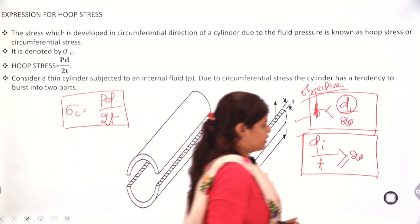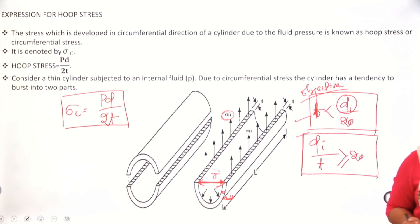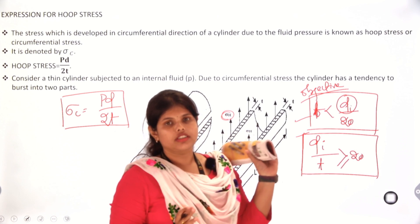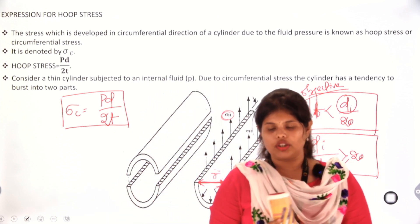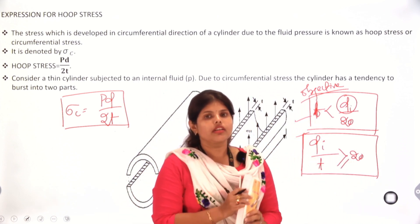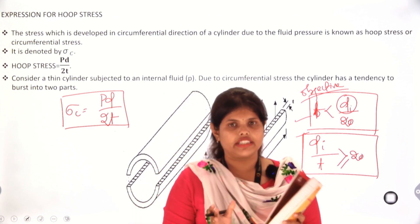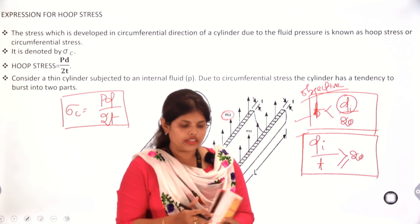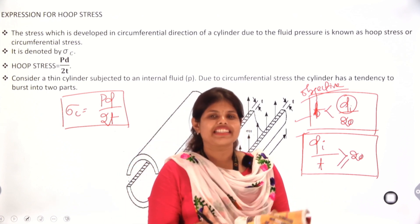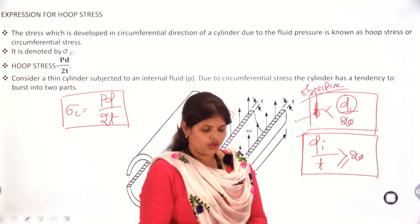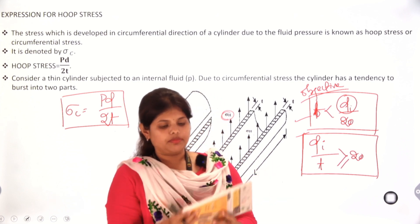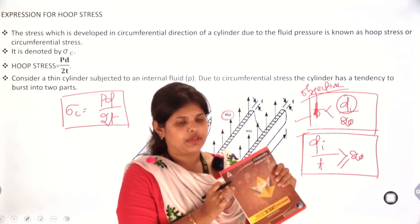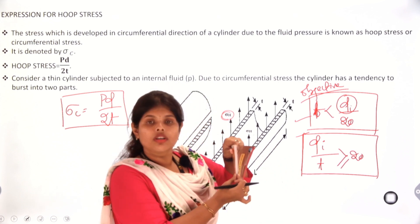What we will learn here is how to consider the thin cylinder. As we have already known, one bursting force is generated. To resist that bursting force, the metal generates one resisting force. Think of it as a metal piece — this is the thickness of the metal.